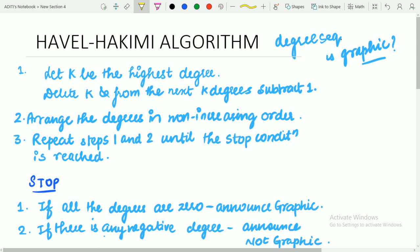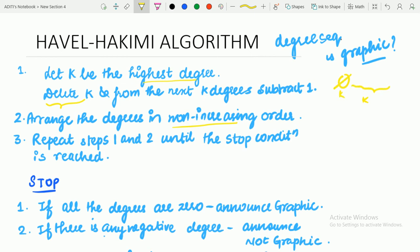Let K be the highest degree. Delete the highest degree — since we are taking non-increasing order, the highest degree will be on the left-hand side. So you delete K, and from the next K degrees, subtract 1 from each. Next, arrange the degrees in non-increasing order. This is the most important point where most students make mistakes — after every iteration or removal of K, you must rearrange the degrees in non-increasing order.